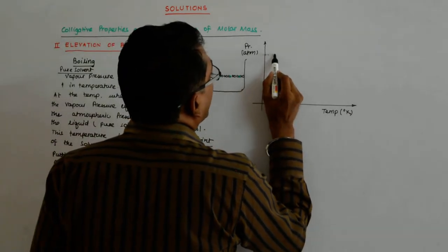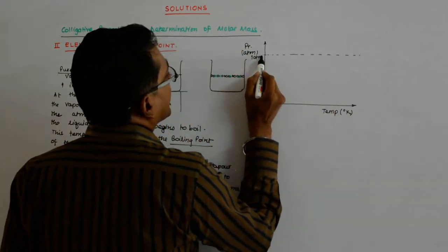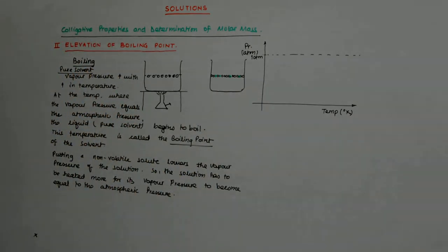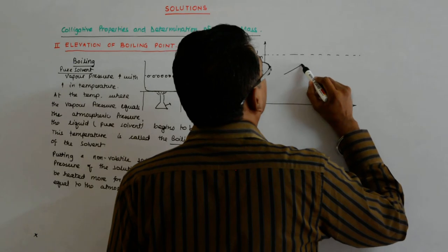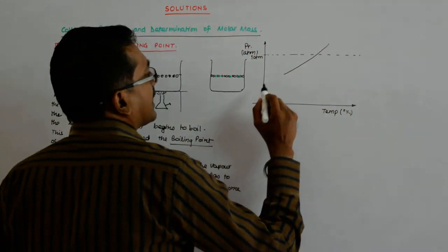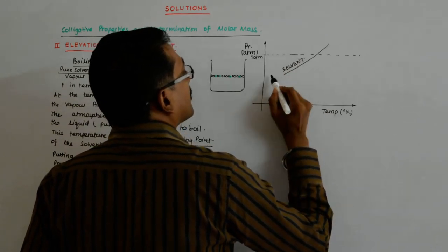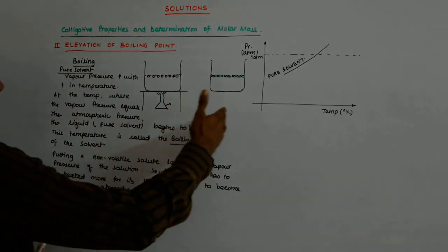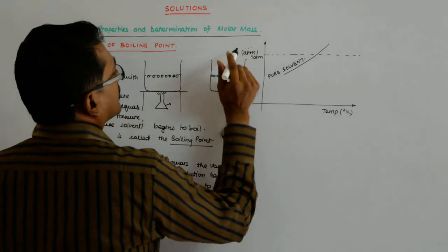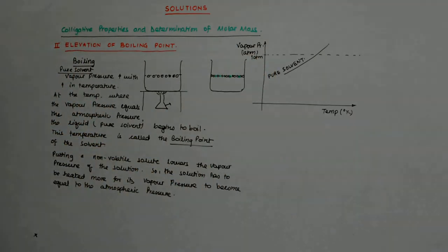At one atmosphere, this is my one atmosphere line. My pure solvent has a characteristic vapor pressure curve — as I increase temperature, the vapor pressure of the pure solvent rises along this curve.